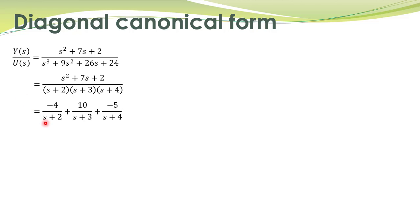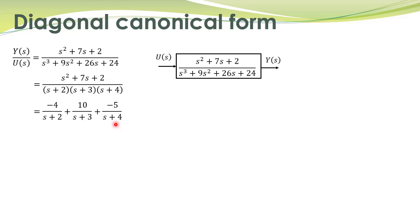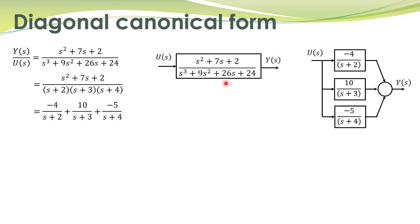So this transfer function is rewritten in this particular format: u(s) multiplied by each of these three transfer functions. You get these three signals and add them together to get y(s).